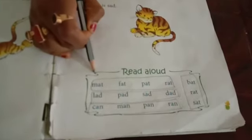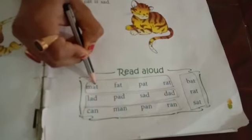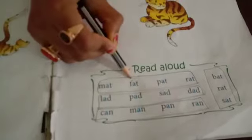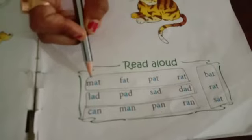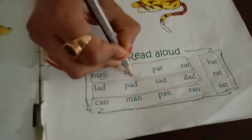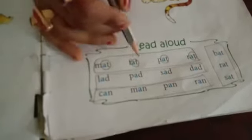Now in page number 11, there are some rhyming words. I have marked some rhyming words. In one box, the last two letters will be the same. M-A-T mat, F-A-T fat, P-A-T pat, R-A-T rat. In all these words, one common thing is there — the last two letters are the same: A-T. So mat, fat, pat, rat — these are rhyming words.